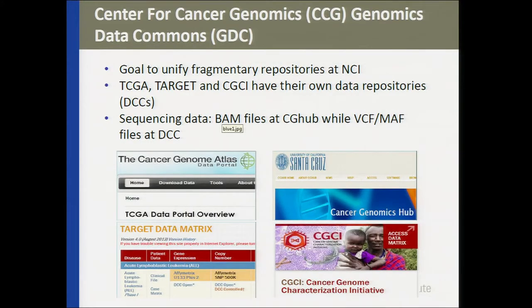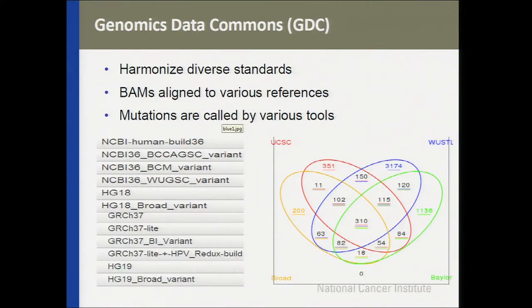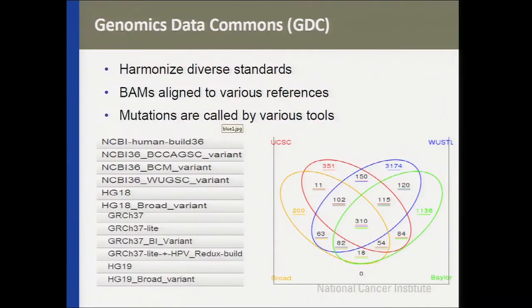There will be a single sign-on for all users; you won't have to go to multiple places to get data from multiple projects. A secondary goal of the GDC is to harmonize the diverse standards we also see in our data. BAMs have been aligned to various different references — HG18, HG19, HG20 — which causes difficulty in analysis. And there's very little overlap among mutation callers, which again makes analyses difficult.